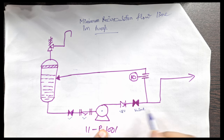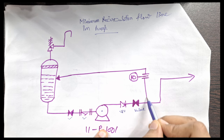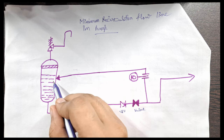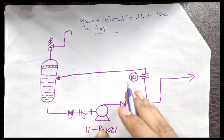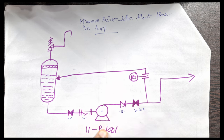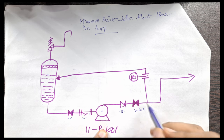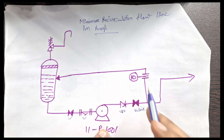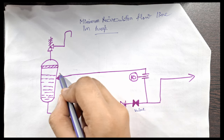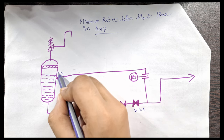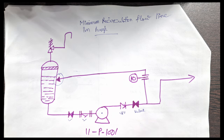After the discharge valve you will see there is one bypass line — you could say a circulation line, or a minimum recirculation line — which we have provided here. In the minimum recirculation line, this line goes back into the vessel again.